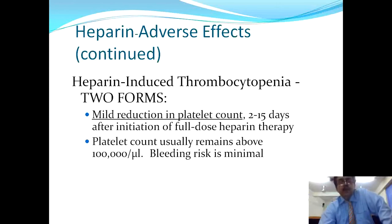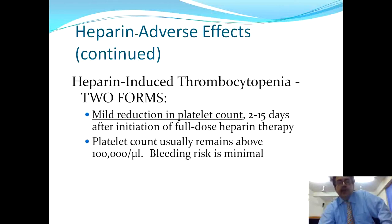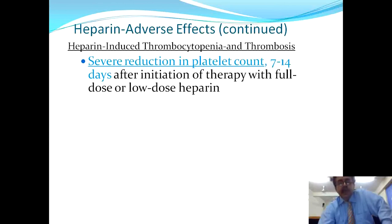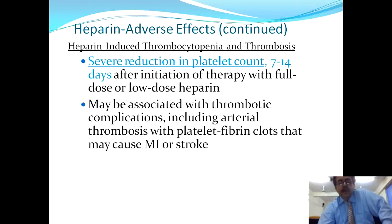Heparin-induced thrombocytopenia has two forms. The first is a mild reduction in platelet count after about 15 days, where the platelet count usually remains above 100,000 and bleeding risk is minimal. The second involves heparin-induced thrombocytopenia and thrombosis simultaneously, especially after two weeks of full-dose or low-dose heparin therapy. This can be associated with thrombotic complications including arterial thrombosis with platelet-fibrin clots.